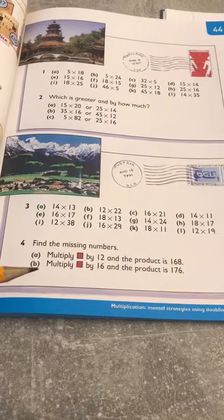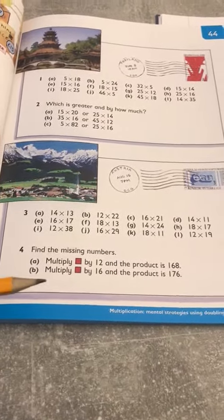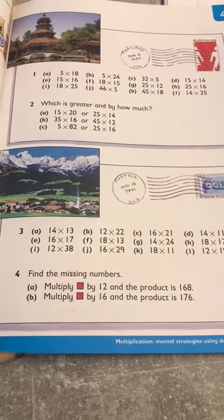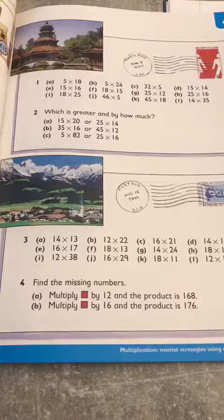And you've got to find the missing number down in question 4. That might be a little bit more challenging, but you can maybe ask an adult for help, or you can ask me on Teams. Good luck. Okay, bye.